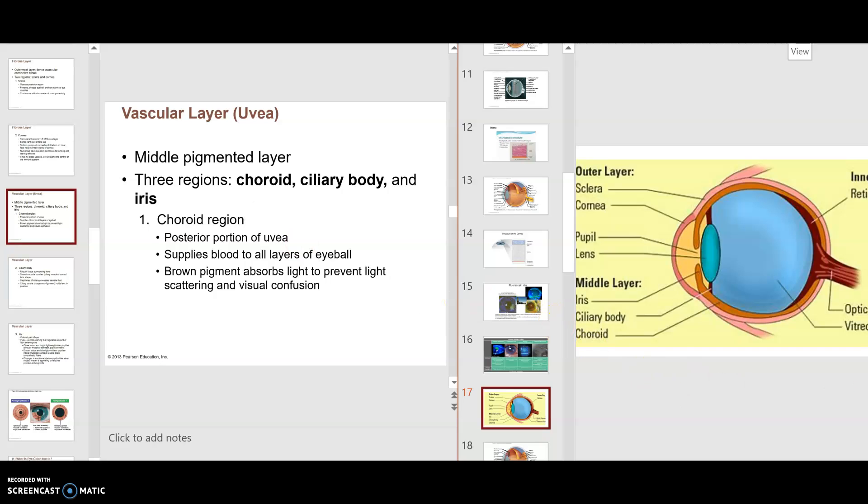The choroid region, which is the posterior region, and this middle layer is also called the uvea. So this posterior region portion of the uvea supplies blood to all layers, because remember it's the vascular layer, to all layers of the eyeball. It has a brown pigment produced by melanin that prevents the scattering of light. So when light comes in, you don't want the back of the eye to be like a mirror, which would reflect the light, and then you would be unable to see.